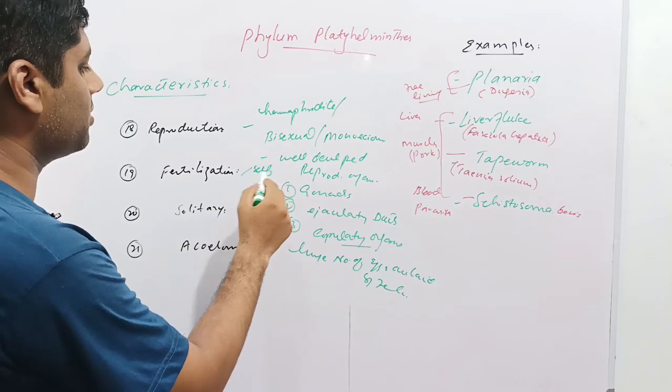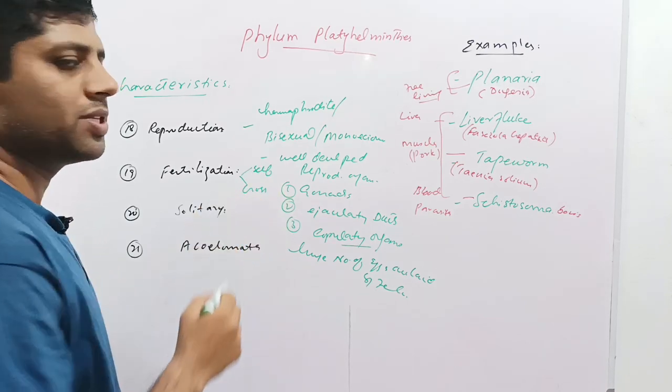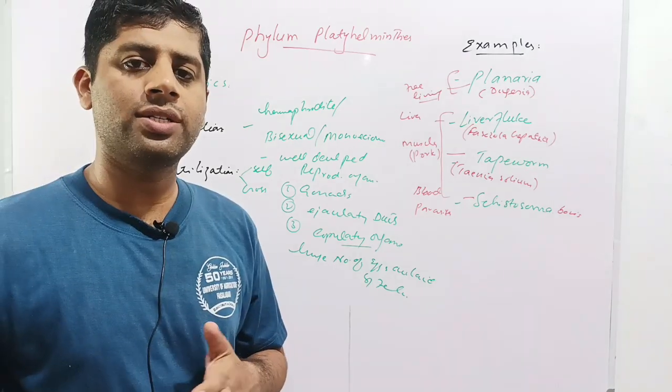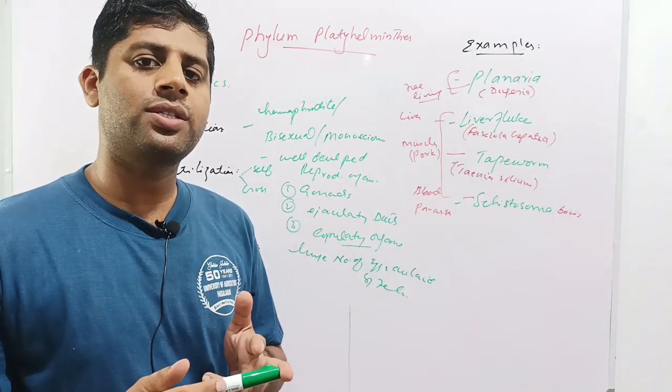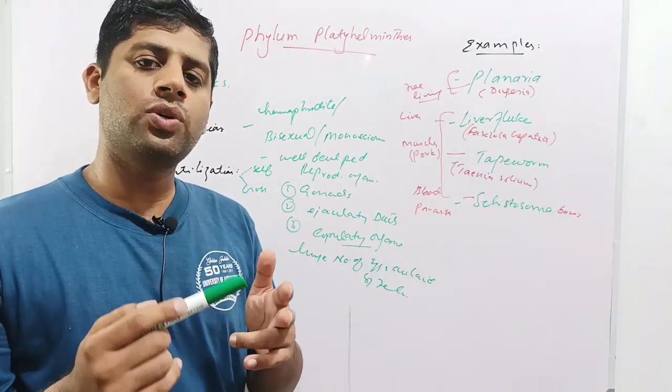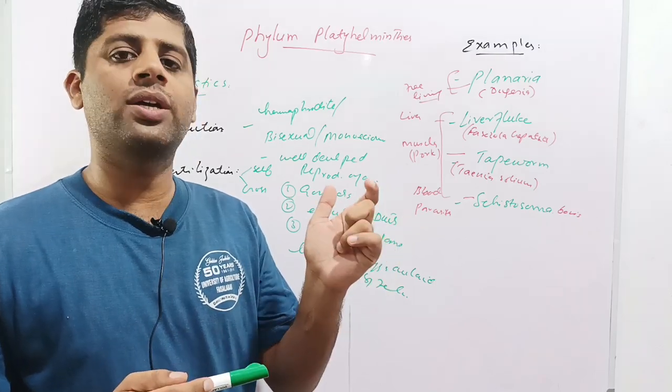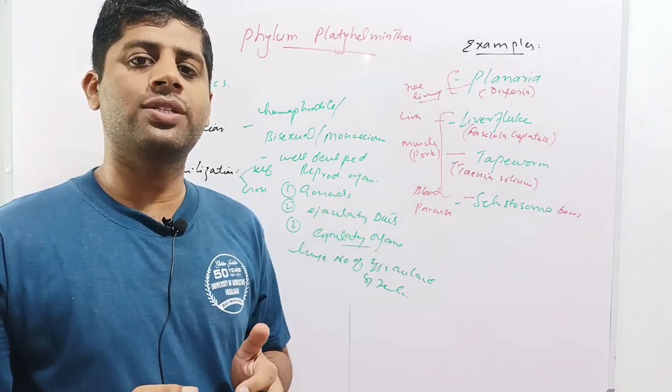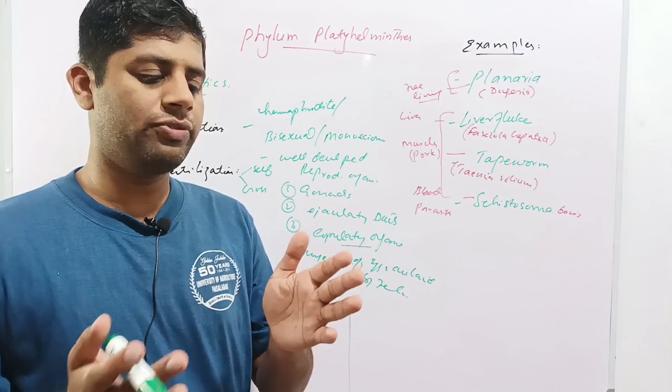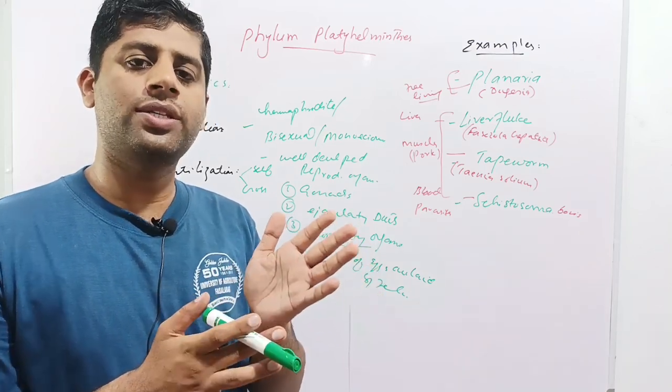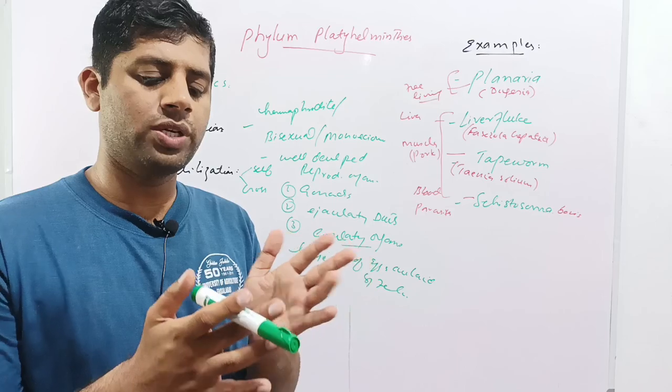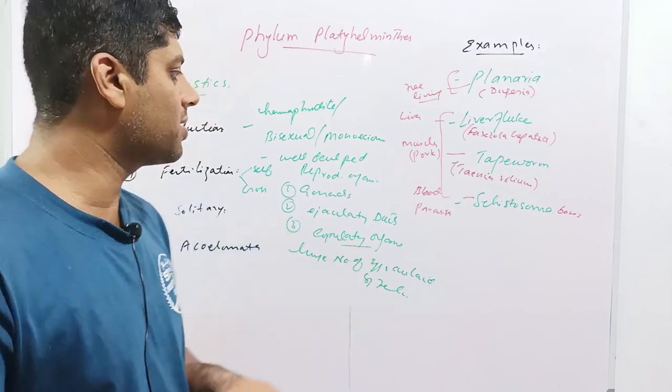Both self-fertilization and cross-fertilization are present in Platyhelminthes. In self-fertilization, the male reproductive organs of a worm copulate with its own female reproductive organs by curving like a hook. In cross-fertilization, the male reproductive organs of one worm copulate with the female reproductive organs of another worm, then vice versa in a cross-like manner.